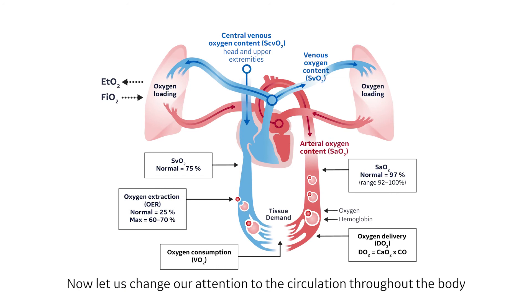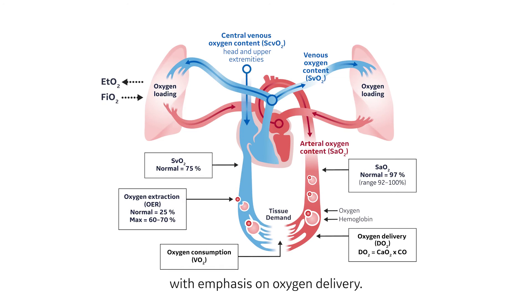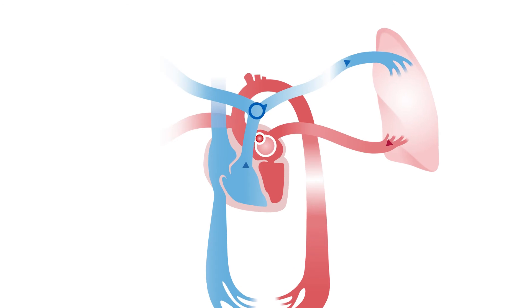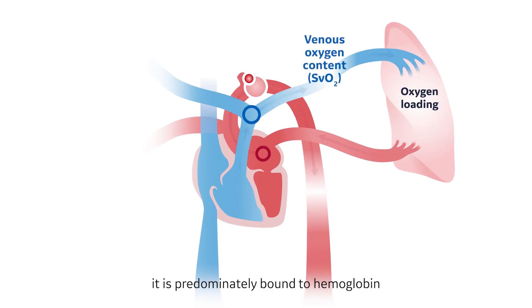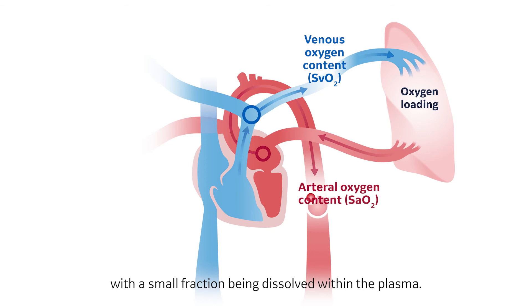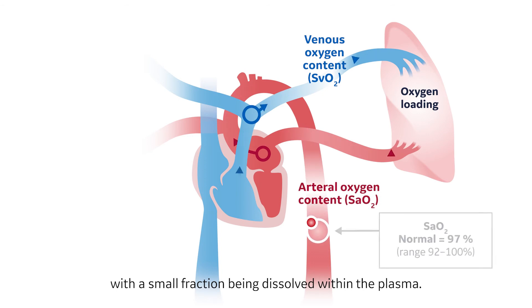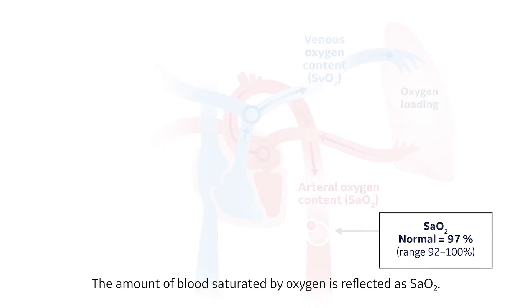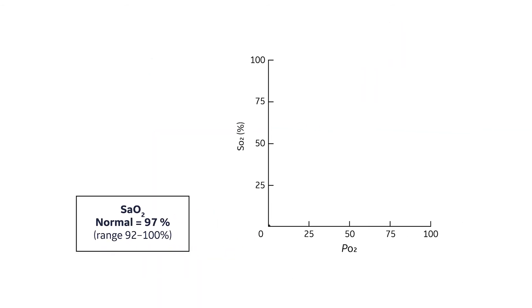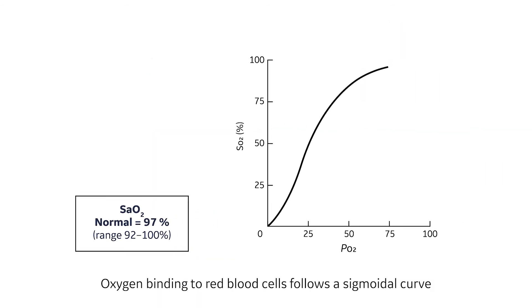Now, let us change our attention to the circulation throughout the body, with emphasis on oxygen delivery. As blood leaves the heart, it is predominantly bound to hemoglobin with a small fraction being dissolved within the plasma. The amount of blood saturated by oxygen is reflected as SAO2. Oxygen binding to red blood cells follows a sigmoidal curve, known as the oxygen saturation dissociation curve.